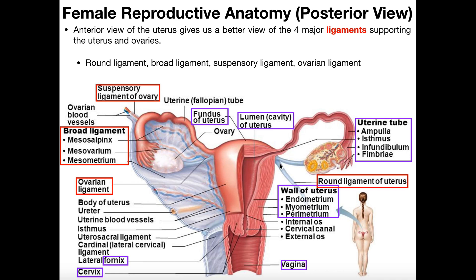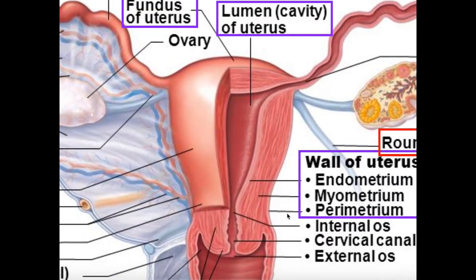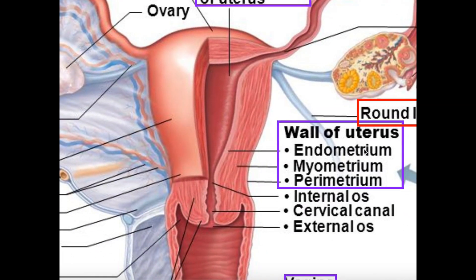Now let's go to the second thing we were going to talk about: the layers of the wall of the uterus. We have three layers: the endometrium, the myometrium, and the parametrium. The outer layer, the most superficial one, is going to be the parametrium. The innermost layer is going to be the endometrium. The endometrium and the myometrium are the two layers where most of the interesting things actually happen.